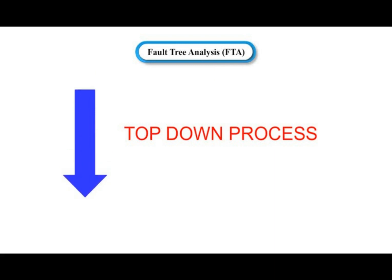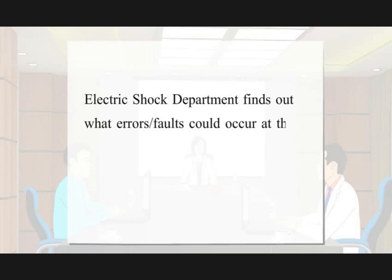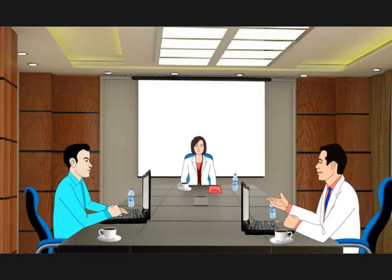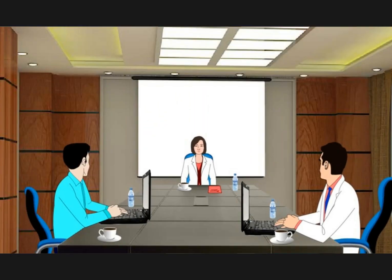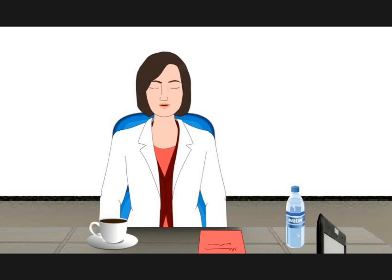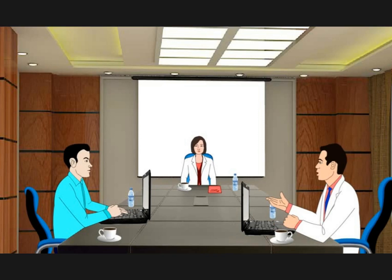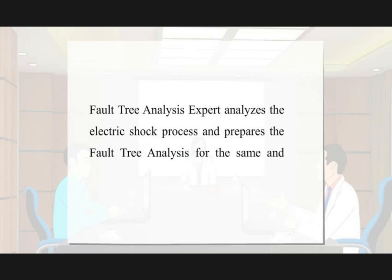Let's watch the e-lecture to understand fault tree analysis. An electric shock department wants to find out what errors or faults could occur at the time of giving electric shock treatment to a patient. The suggestion is to use fault tree analysis, which is a tool for evaluating a device from a top-down perspective and is an excellent tool for finding single fault conditions — that is, a single failure that may result in a hazard. A fault tree analysis expert then analyzes the electric shock process and prepares the fault tree analysis to discuss with the doctor.